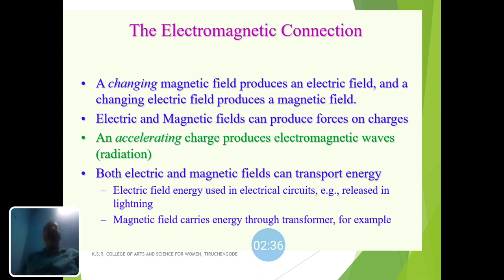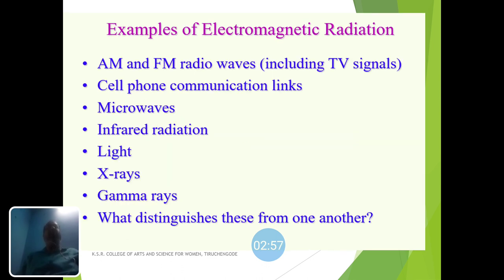Electromagnetic wave radiation: both electric and magnetic fields can transport energy. Electric field energy is used in electrical circuits — for example, it produces lightning. Magnetic fields carry energy through transformers. Examples of electromagnetic radiation include amplitude modulation and frequency modulation — that is, AM and FM radio waves — including TV signals, and it is applicable in cell phone communication links.